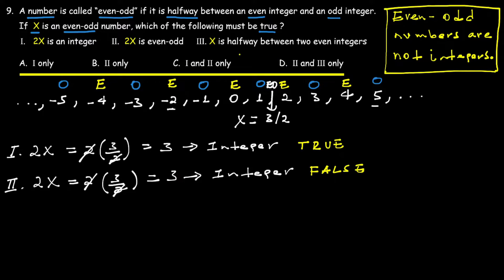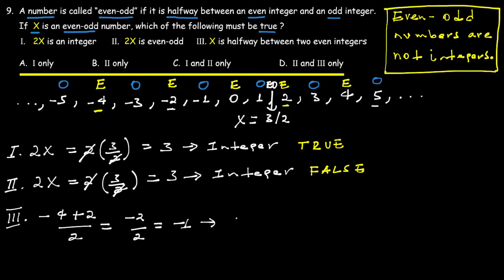Statement 3: x is halfway between two even integers. Let's check this. Take an example: negative 4 and 2 as two even integers. The halfway point between negative 4 and 2: negative 4 plus 2 divided by 2 equals negative 1, which is an integer — not necessarily halfway between two even integers. So Statement 3 requires further verification.